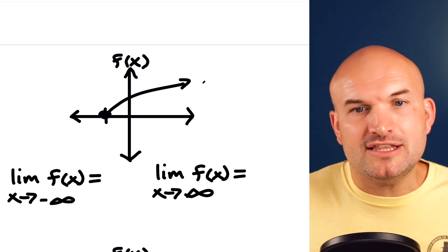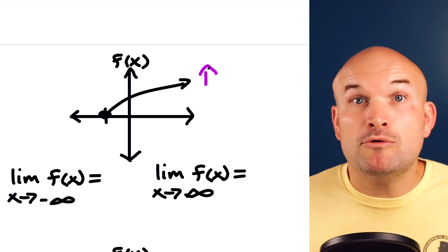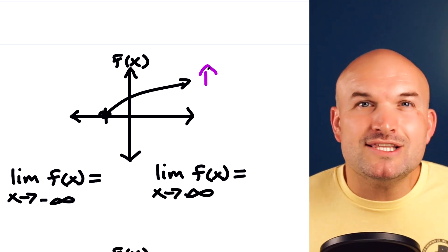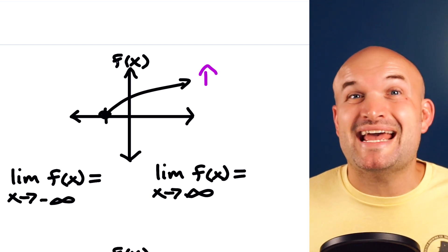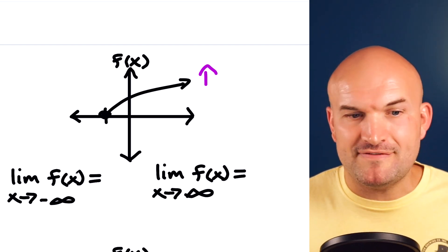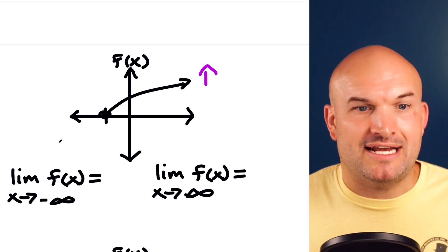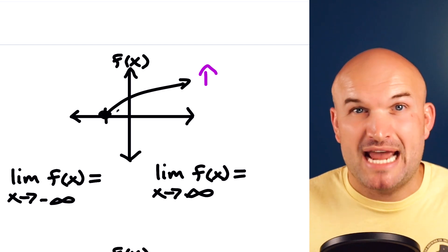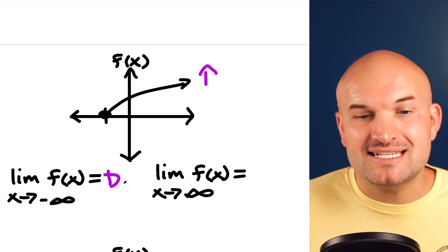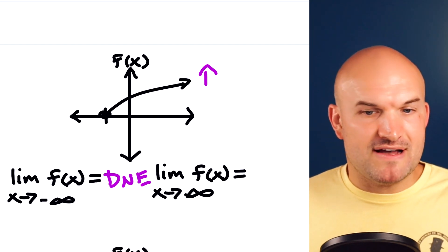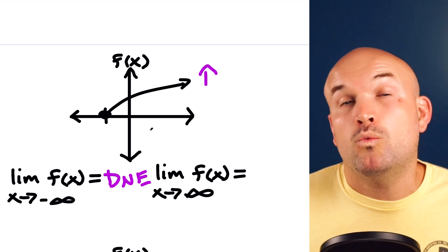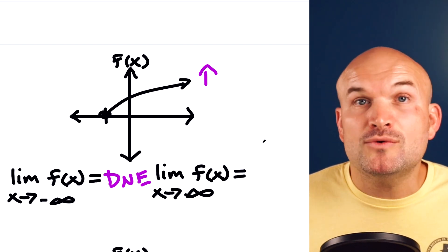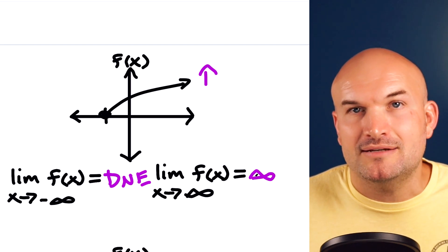As we continue going to the right, the graph is going to keep going up and up — it's rising. When we talk about limits, we need to understand limit notation. We use the language of 'approaching,' represented with an arrow. The limit of f of x as x approaches negative infinity means where's the graph going as we expand to the left — and since it's not going anywhere, the limit does not exist. The limit as x approaches positive infinity: the graph goes up to positive infinity.